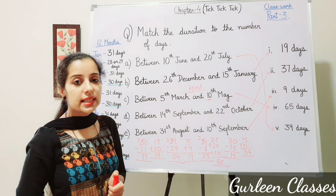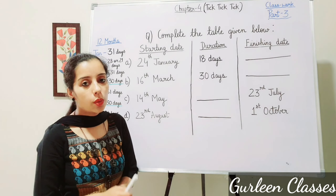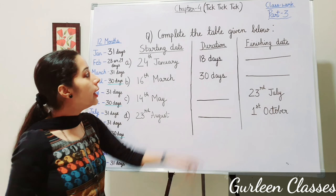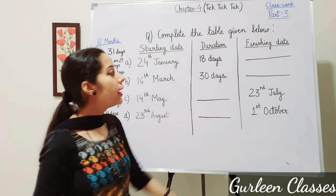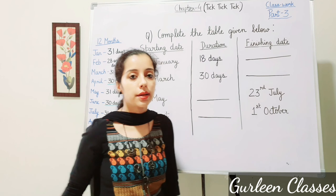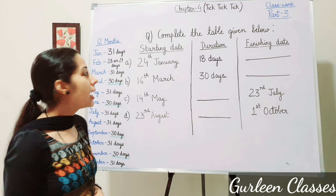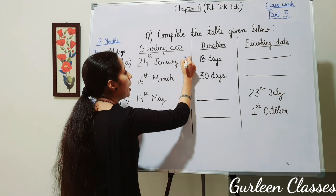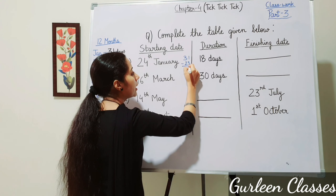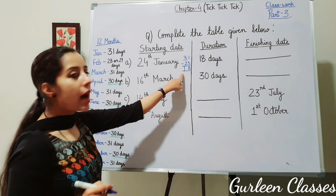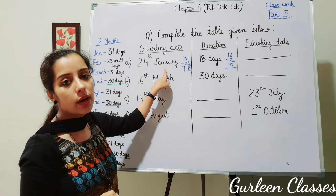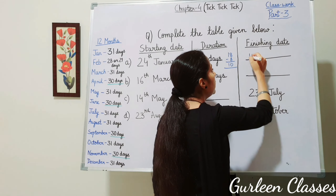Next question: Complete the table. Part A: starting date 24th January, duration 18 days — find the finishing date. January has 31 days. Days remaining after 24th January: 31 minus 24 equals 7, but days before 24 are 23, so 31 minus 23 equals 8 remaining days. 18 minus 8 equals 10, so after January comes February. Finishing date: 10th February.